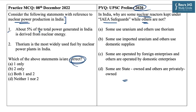Statement 1 says about 5% of total power generated in India is derived from nuclear energy. Statement 2 says thorium is the most widely used fuel by nuclear power plants in India. You can pause this video and try to solve this question.